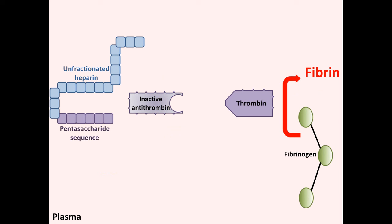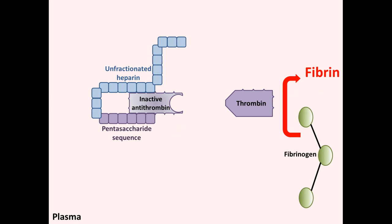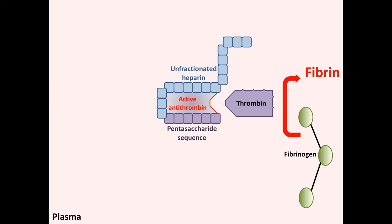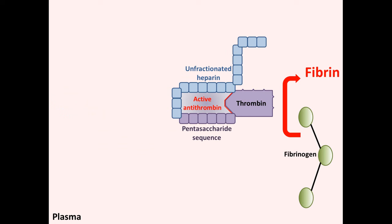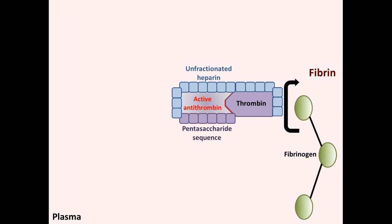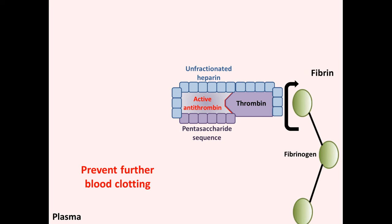In the same way, unfractionated heparin binds and causes a conformational change to the inactive antithrombin, accelerating the interaction between the active antithrombin and thrombin. Unfractionated heparin serves as a catalytic template to block thrombin from fibrinogen, which is responsible for inhibiting fibrinogen to fibrin conversion. The end result is to prevent further formation of any clots within the plasma.